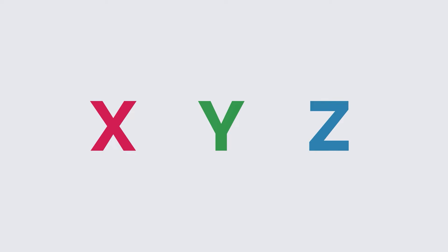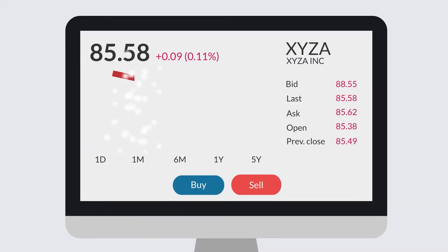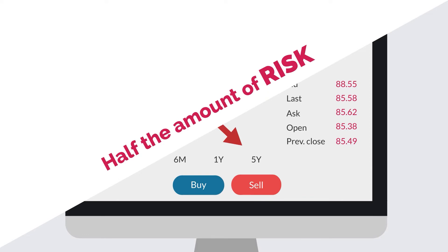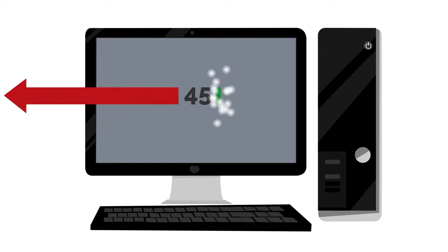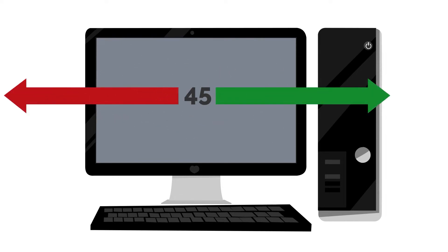Here's an example. Suppose you own XYZ company shares and have decided 1% of your portfolio will be risked in this trade. You're taking half the amount of risk because if it drops down to $45 or lower, a sale is automatically placed at $45. Leave it like that for now, or adjust things depending on which direction the stock moves from there.